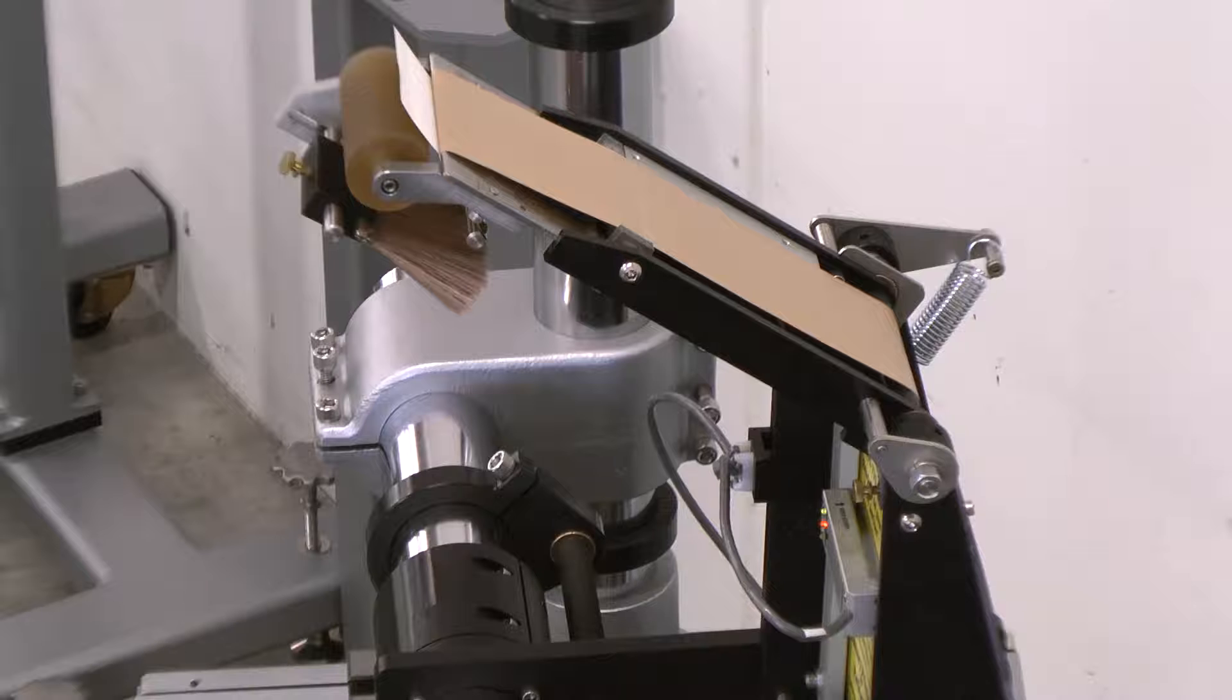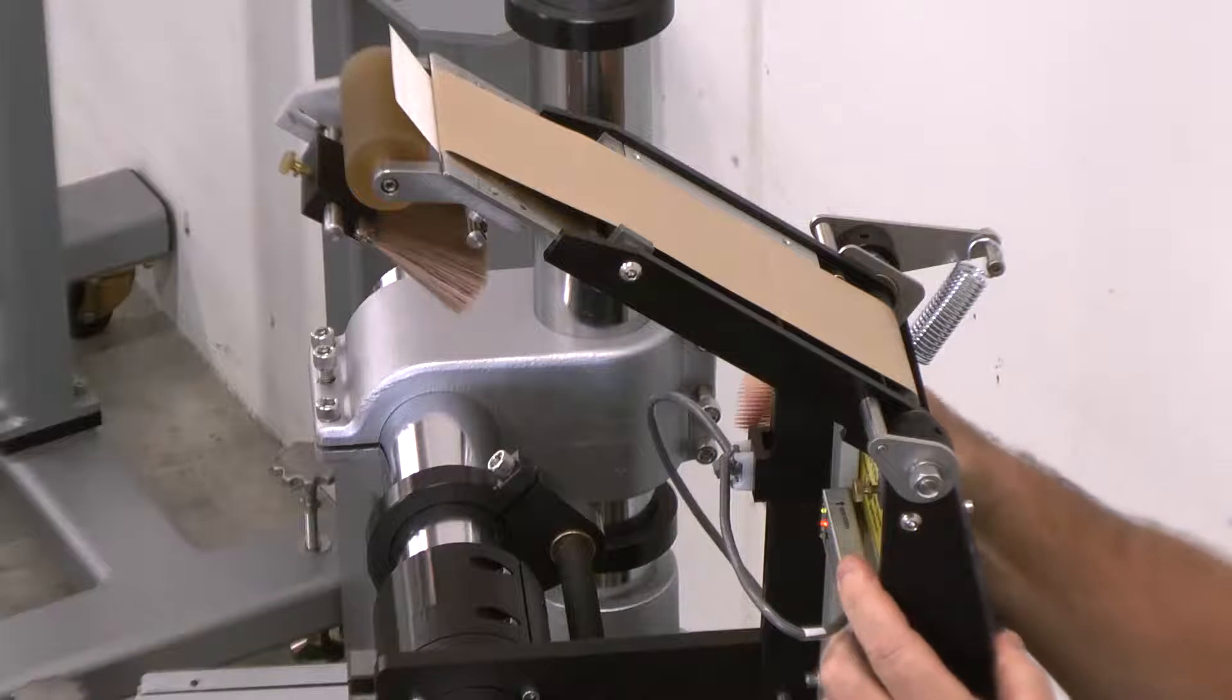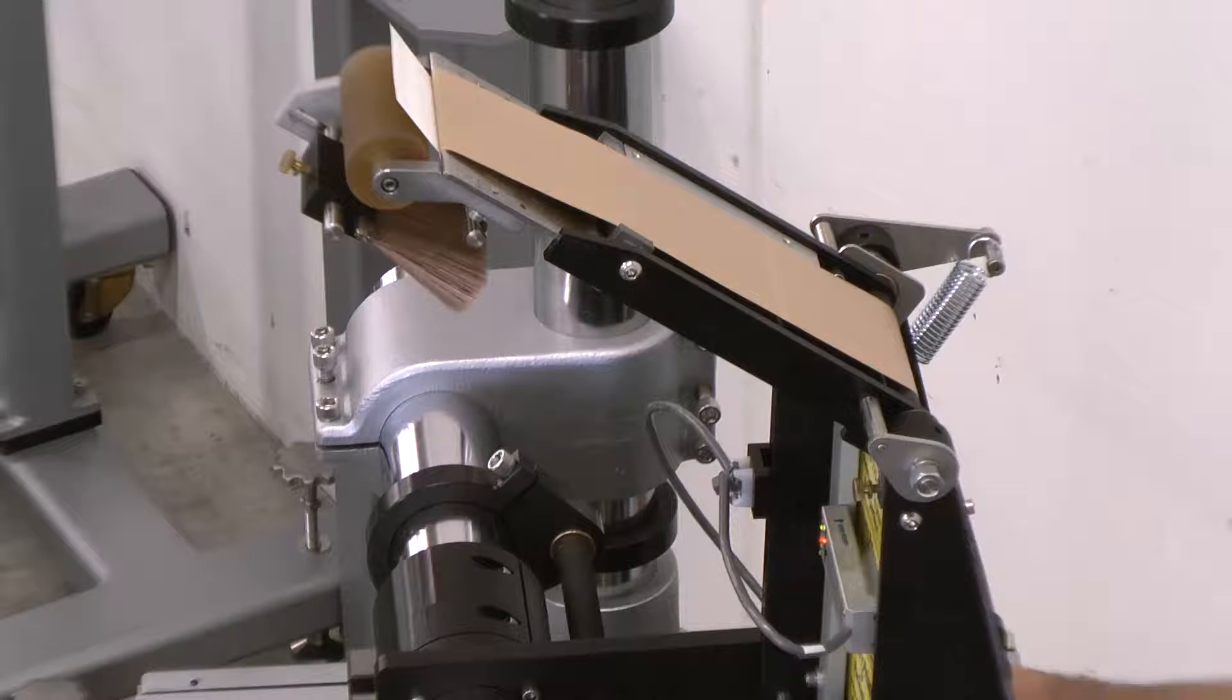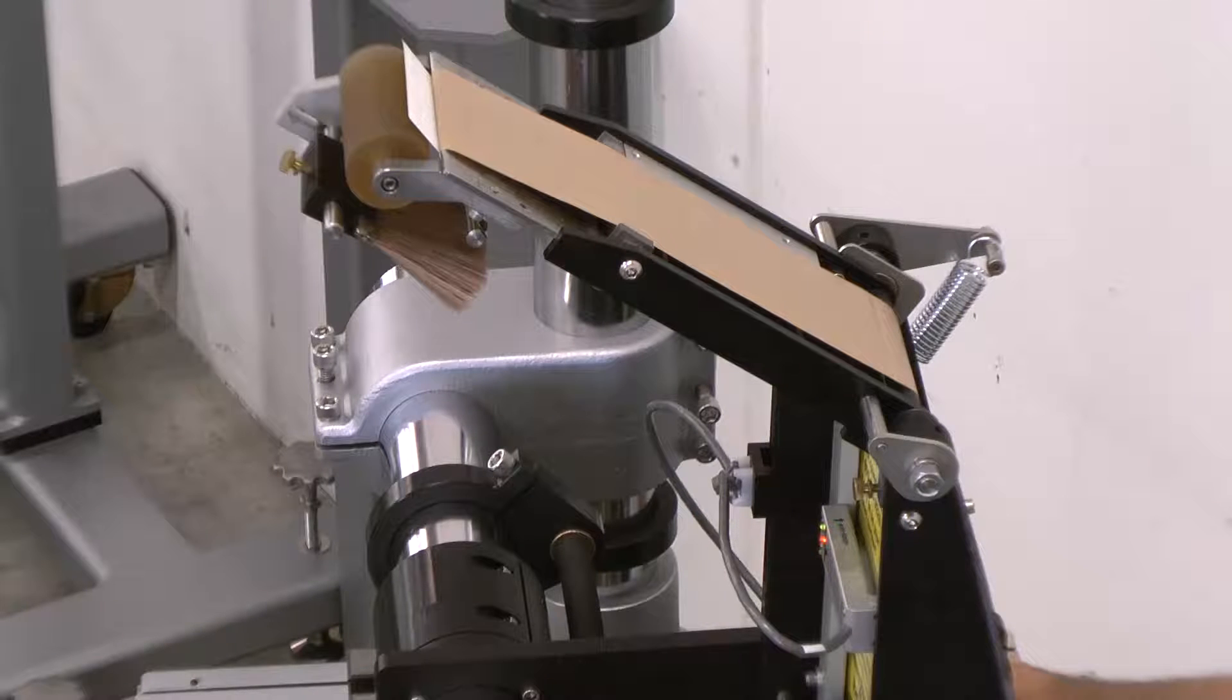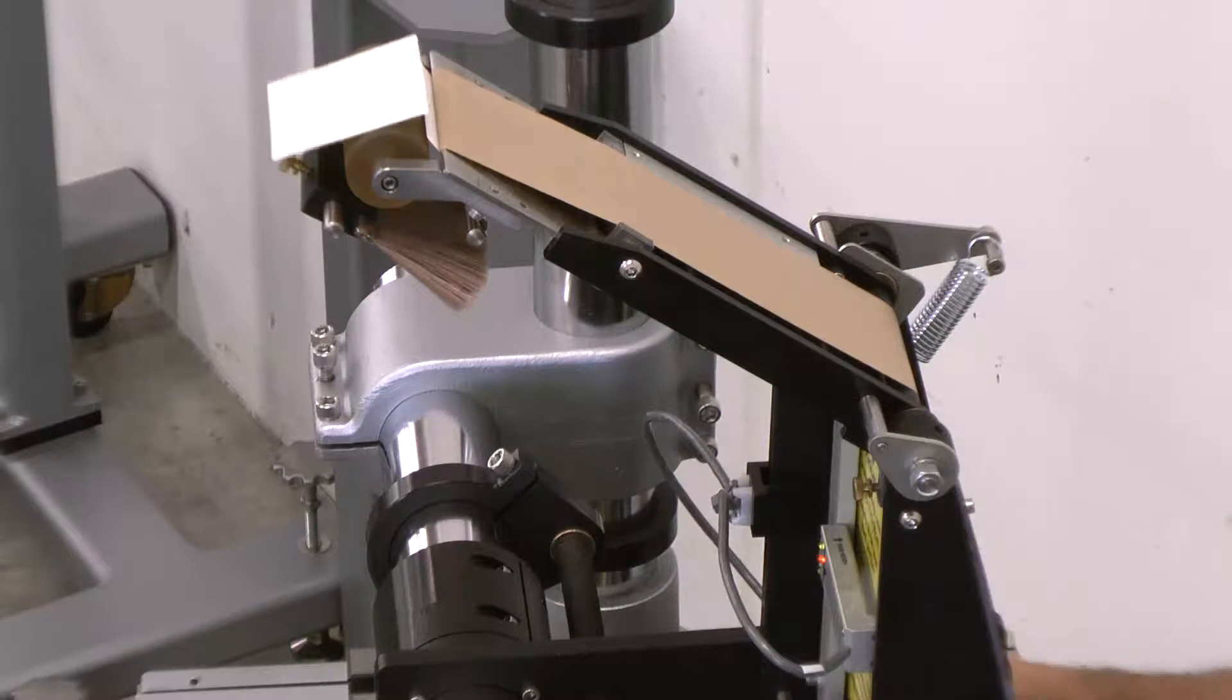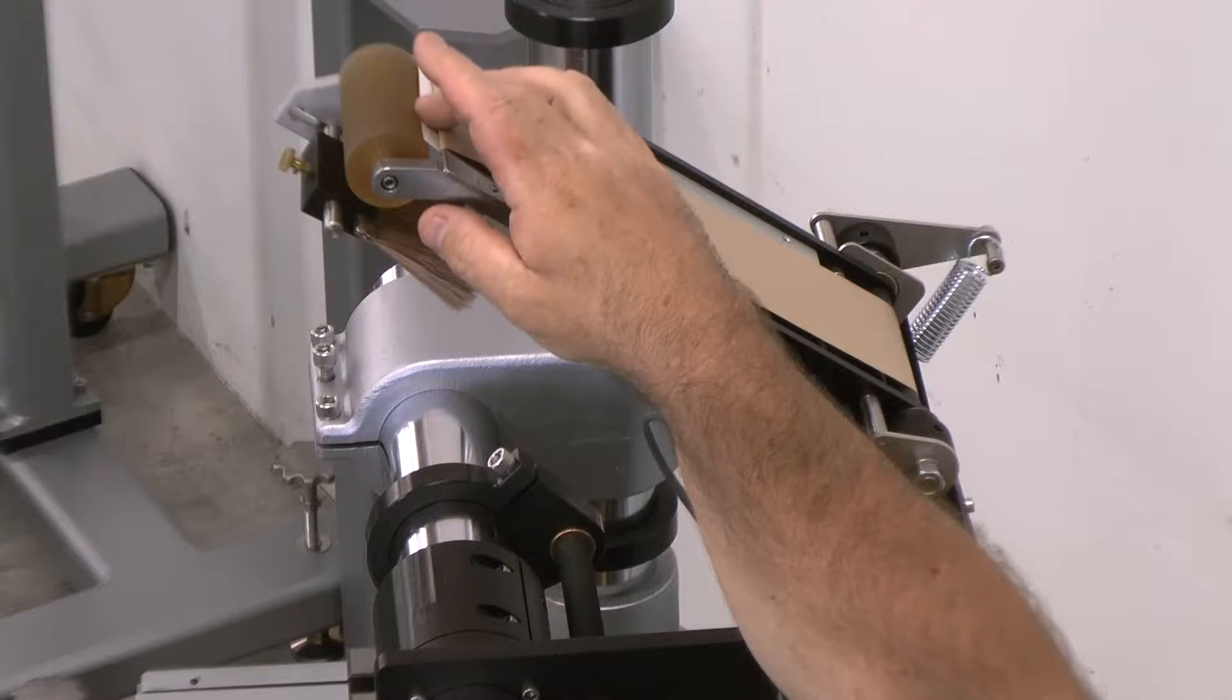In order to check this, jog one label, and then adjust the sensor down to shorten the flag or up to extend it. Once you've made the sensor adjustment, you must jog another label. You can see here that we still have a little bit too much flag, so I'll drop the sensor again. And now I am comfortable that I have about a quarter to three eighths of an inch of label flag.